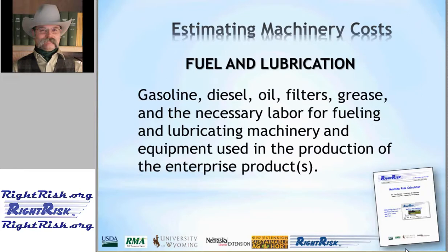Fuel and lube primarily covers the fuel costs, whether it's gasoline, diesel, or in the case of powered irrigation equipment, liquid propane. But it also includes other items that go along with fuel: oil, filters, grease, and the labor necessary for fueling the equipment and lubricating the machinery before and during use. This category is important to make sure we get everything included beyond just the cost of the fuel itself.